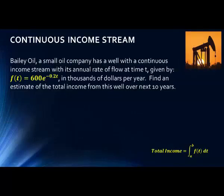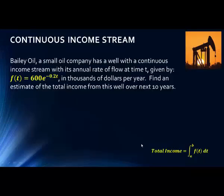Bailey Oil is a small oil company that has a well with a continuous income stream with its annual rate of flow at time t given by F(t) = 600e^(−0.2t) in thousands of dollars per year. Find an estimate of the total income from this well over the next 10 years. This is a very simple problem — we've been given the formula, and we just evaluate the integral over A to B. Our function F(t) is given to us.